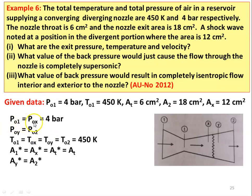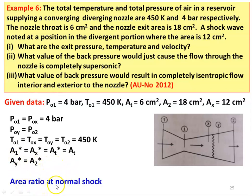Given: PO1 = 4 bar, TO1 = 450 Kelvin, throat area At = 6 cm², exit area = 18 cm², shock area Ax = Ay = 12 cm². We know PO1 = POx = 4 bar, POy = PO2, and stagnation temperature is constant throughout: TO1 = TOx = TOy = TO2 = 450 Kelvin. Also At = Ax* = A1*. After the shock, Ay* = A2*. Area ratio at the shock: Ax/Ax* = 12/6 = 2.